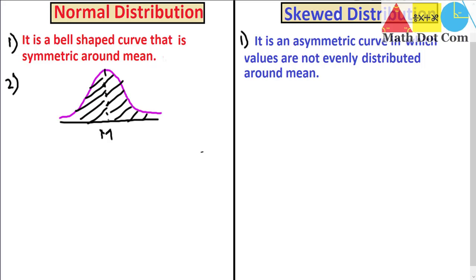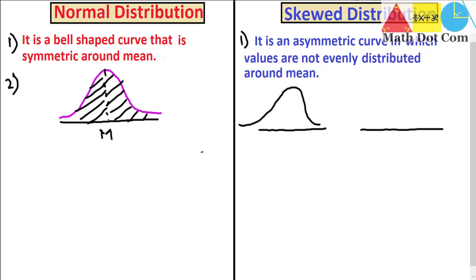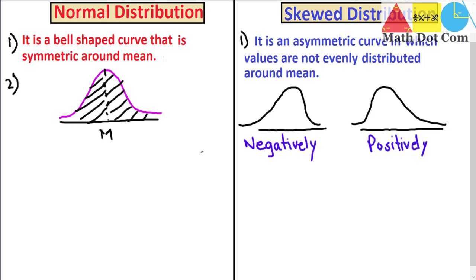In normal distribution, more values tend to be around the mean. In skewed distribution we have two different types: one is called negatively skewed distribution and the other is called positively skewed distribution. In both diagrams it is clearly shown that the data is not evenly distributed around the mean.